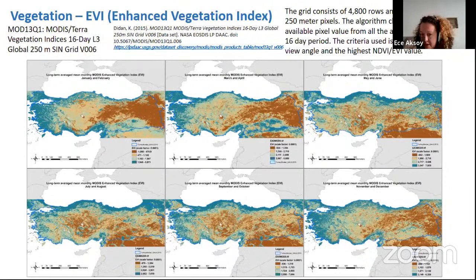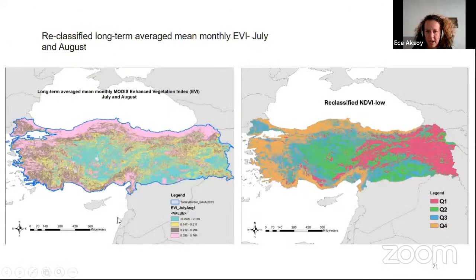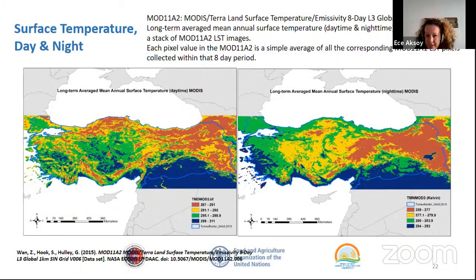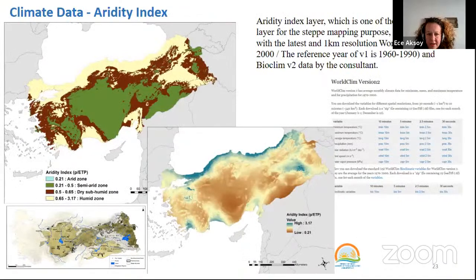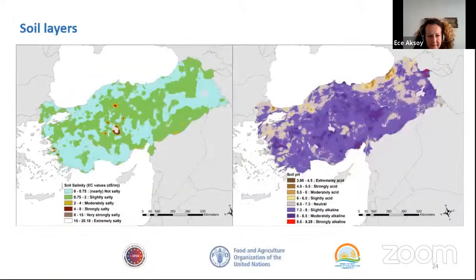We realized that the July and August layers gave us the whole picture. We reclassified the enhanced vegetation index long-term series and NDVI lowest quantile layers. We also took into account MODIS land surface temperature for daytime and nighttime, which gave very interesting signatures of the Anatolian steppe character. We also took into account soil layers, especially the salinity of the soil and soil pH.